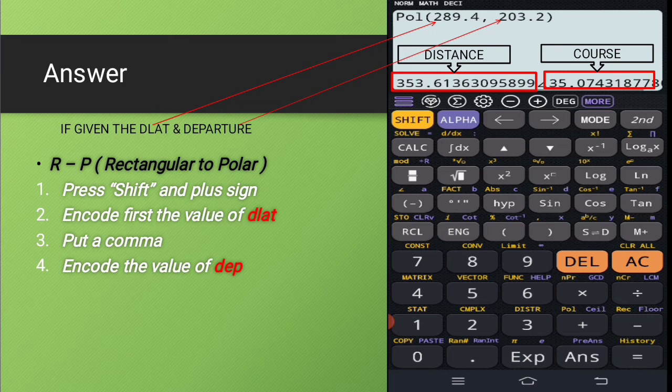Then third step is to put a comma. So that is very important. So in my case, I have to press the shift button and the open parenthesis button for me to have a comma. And lastly, we need to encode the value for the departure, which is 203.2. And right after that,